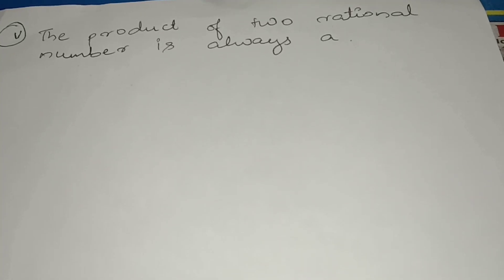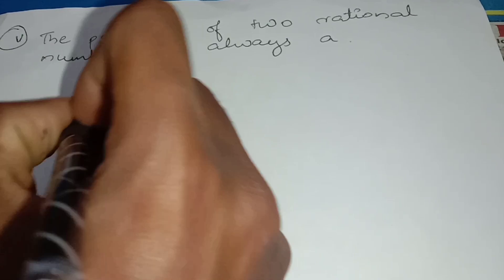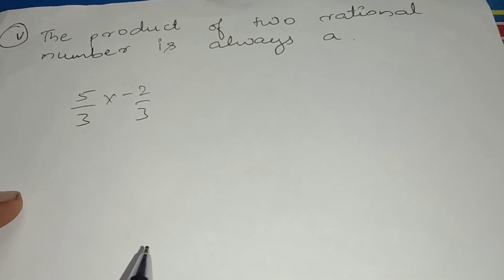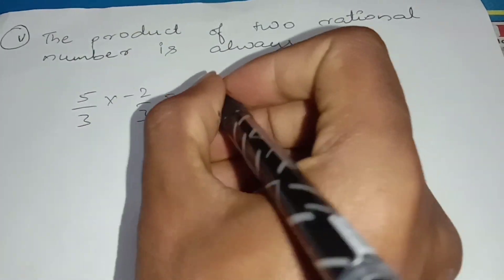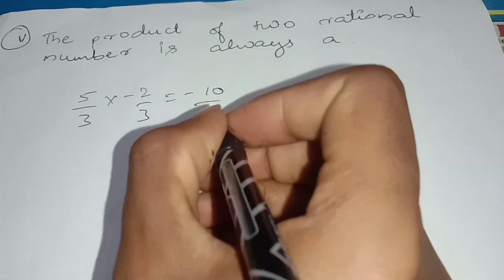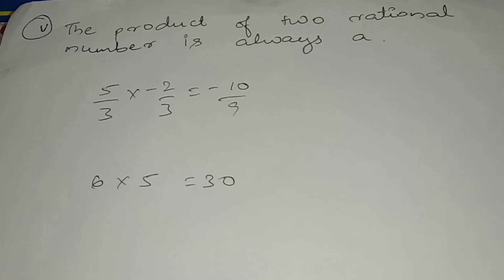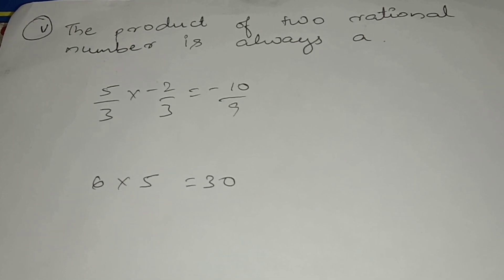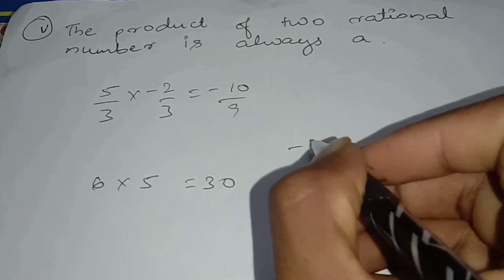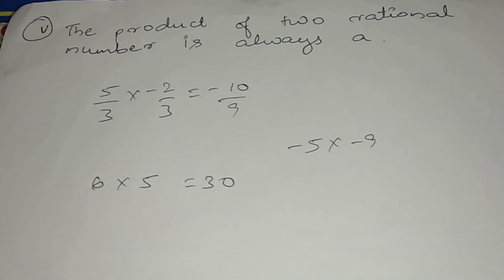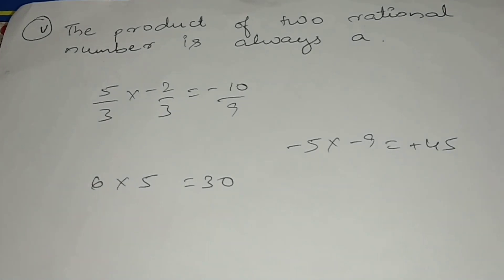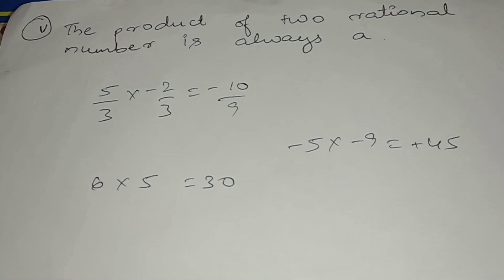The product of two rational numbers is always a rational number. For example, if I take 5 by 3 multiplied by minus 2 by 3, the product will always be a rational number. Similarly, taking other examples like minus 5 multiplied by minus 9 gives 45, the product of two rational numbers will always be a rational number.